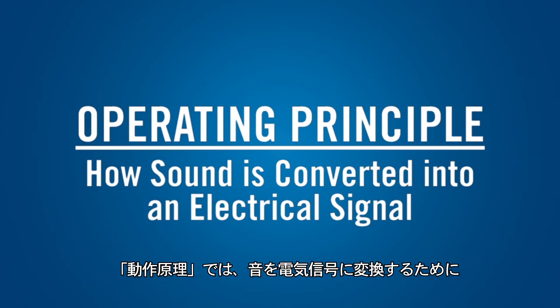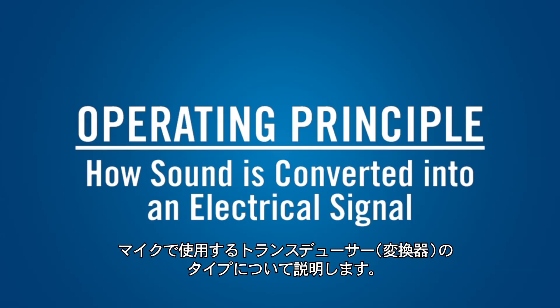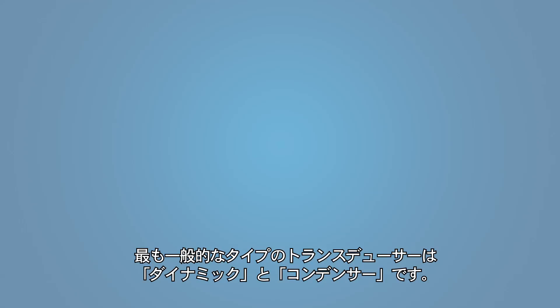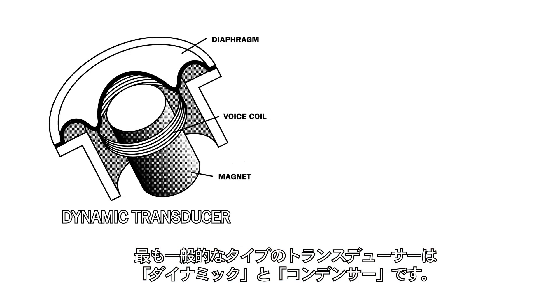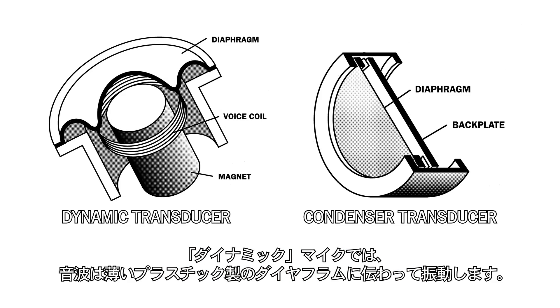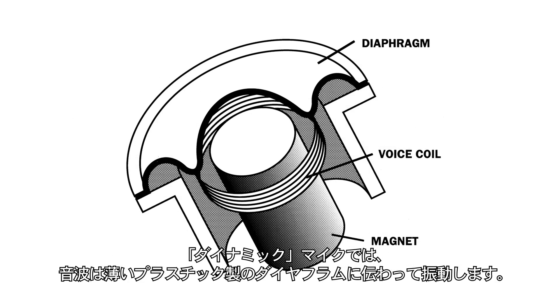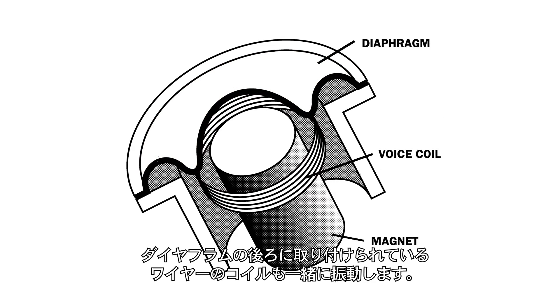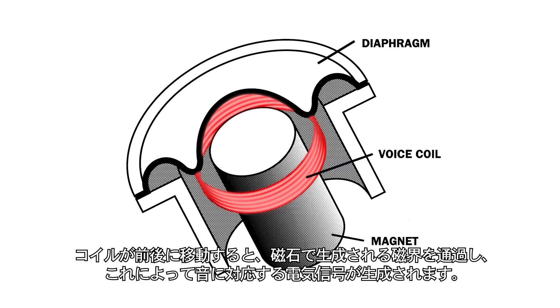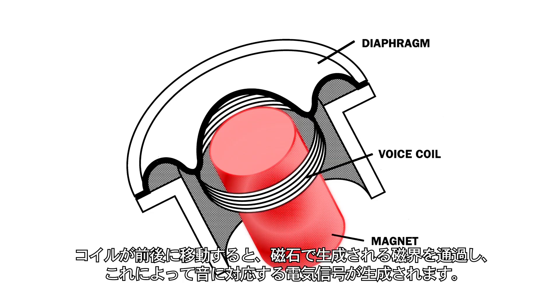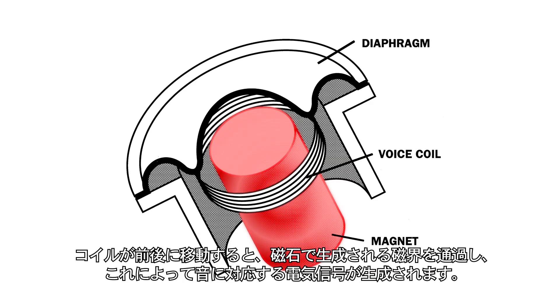The operating principle describes the type of transducer that the microphone uses to convert sound into an electrical signal. The most common transducer types are dynamic and condenser. In a dynamic microphone, sound waves strike a thin plastic diaphragm and cause it to vibrate. A coil of wire attached to the back of the diaphragm vibrates along with it. As the coil moves back and forth, it passes through a magnetic field created by a magnet, which generates an electrical signal that corresponds to the sound.